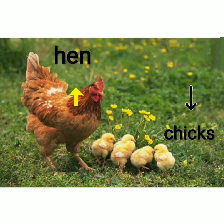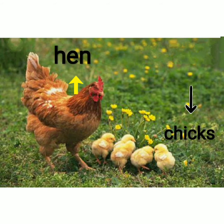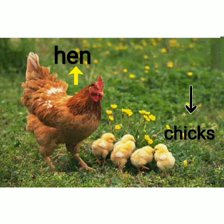Next is hen. H-E-N, hen and chicks, C-H-I-C-K. Chick hota hai agar ek baby ho, lekin yaha pe bahut saare hai, isi liye chicks, C-H-I-C-K-S.